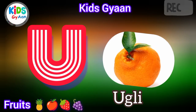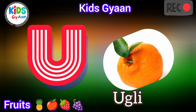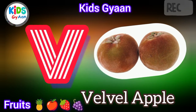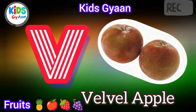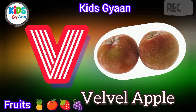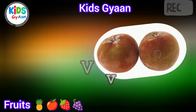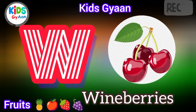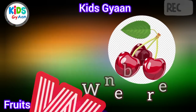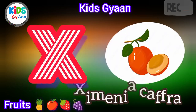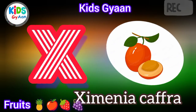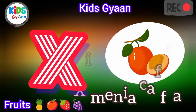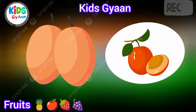U is for Ugli Fruit. V is for Velvet Apple. W is for Wineberries. X is for Samania Cofra.